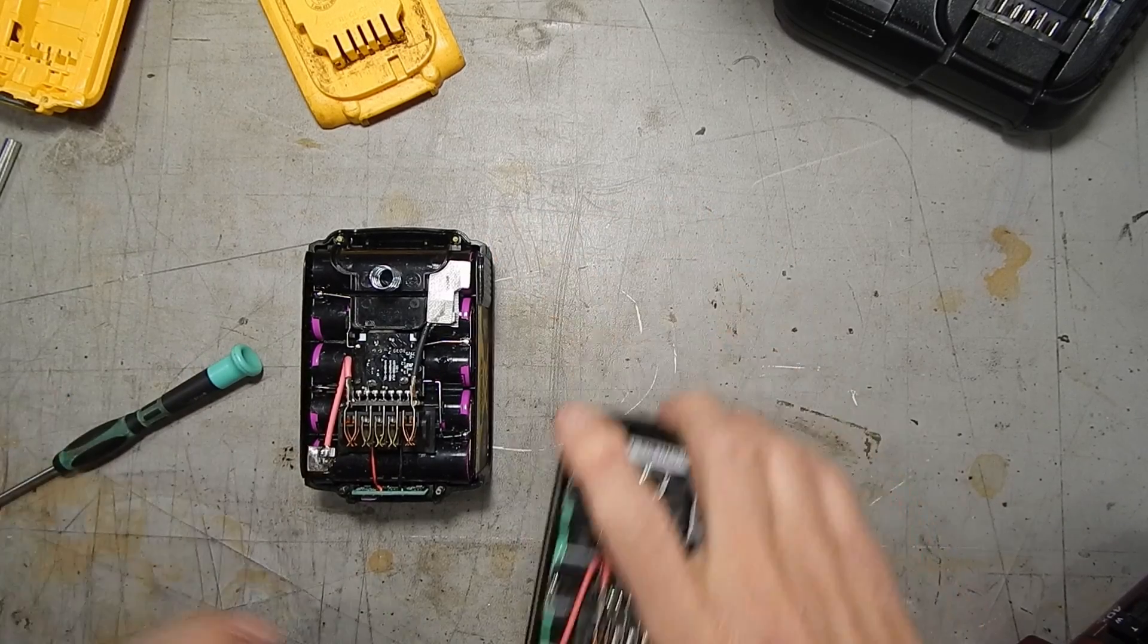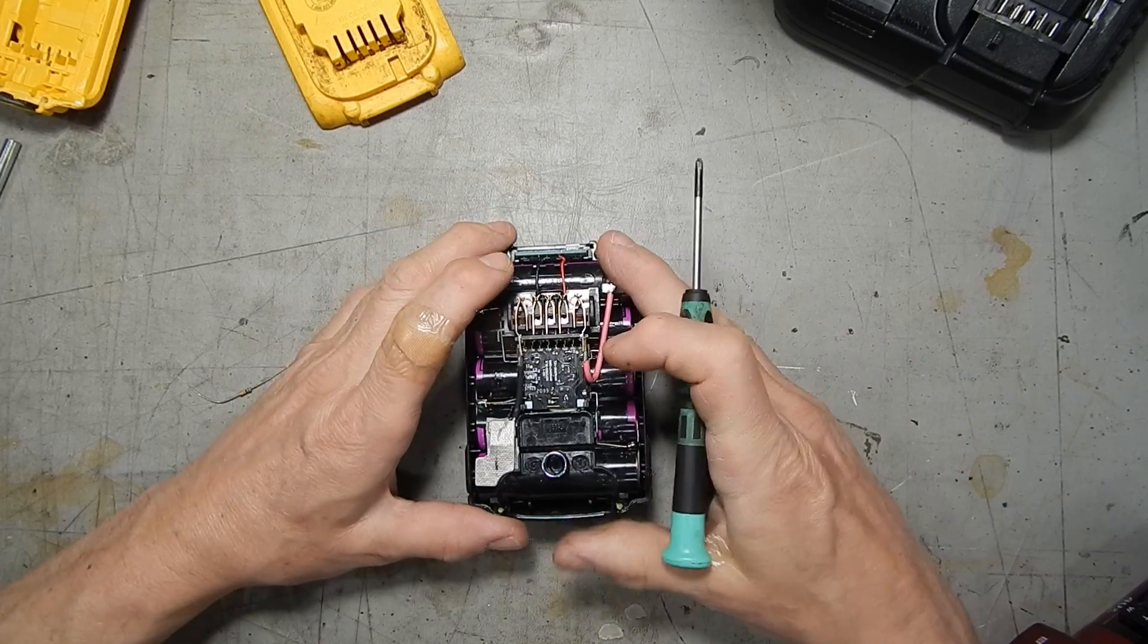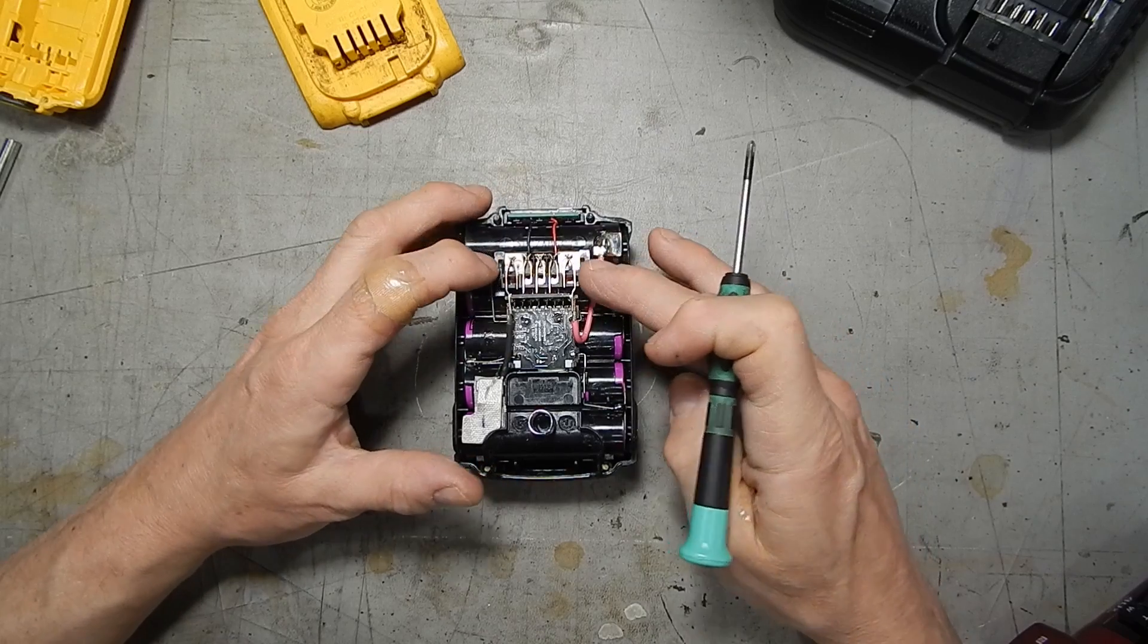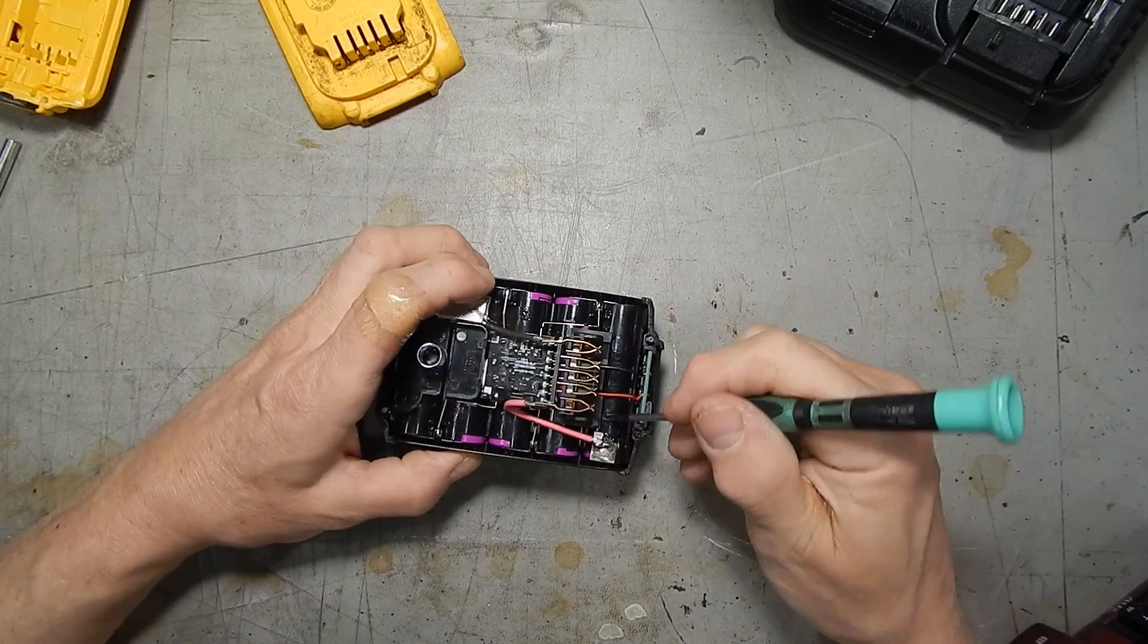So this is our good pack. It looks like to get to the bottom of this board we're going to have to remove it, which means desoldering these big wires.